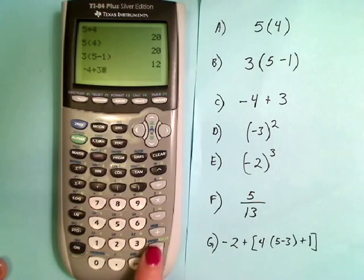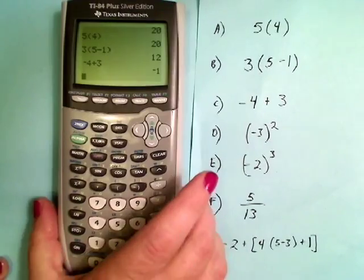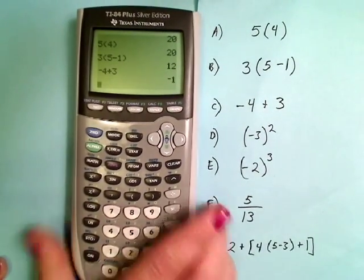So -4 + 3, press enter, and we get -1, just like we should.